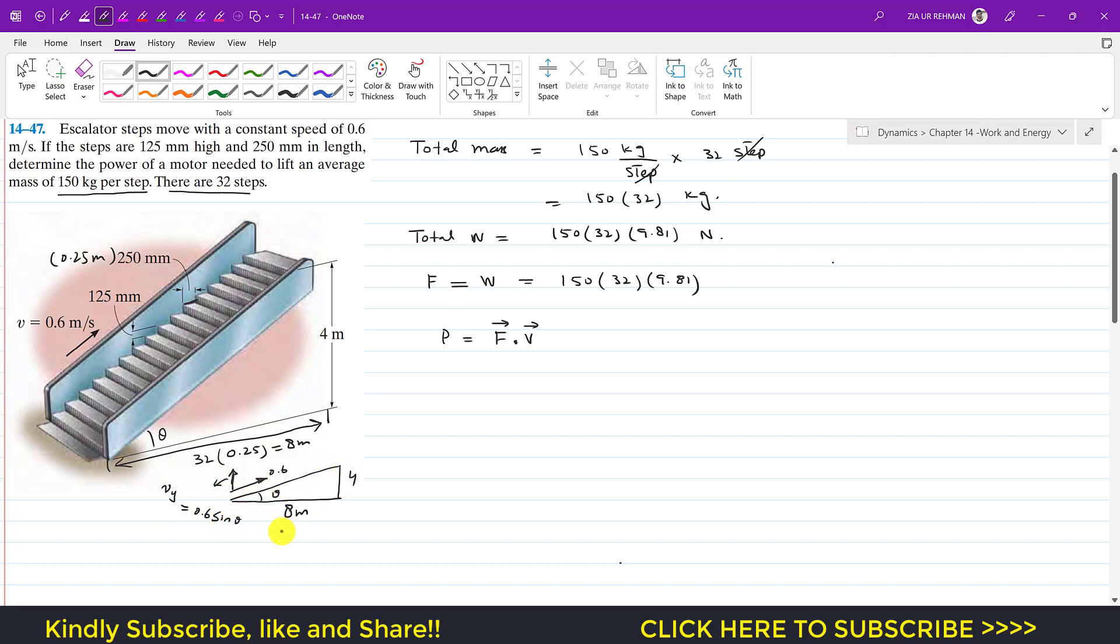From these lengths we can find sine of theta. We can find this length by using the Pythagorean theorem. Let's say that the hypotenuse, this length is x, so x squared is equal to 8 squared plus 4 squared under the square root.